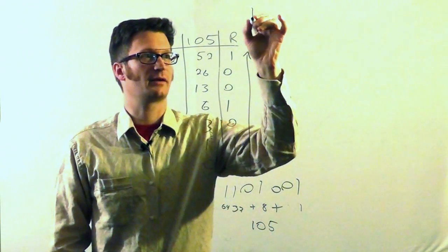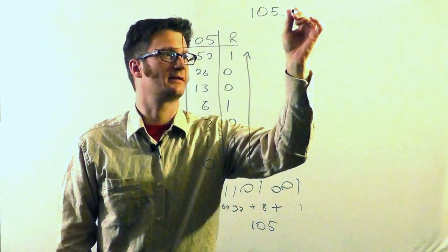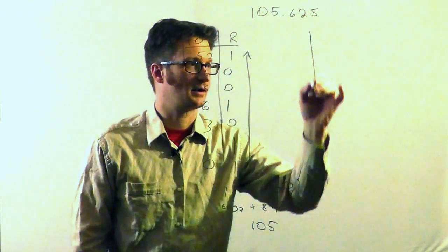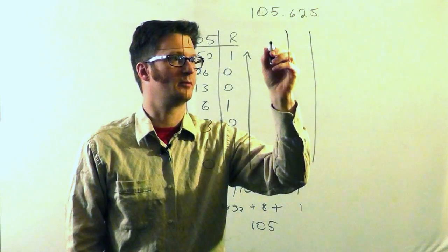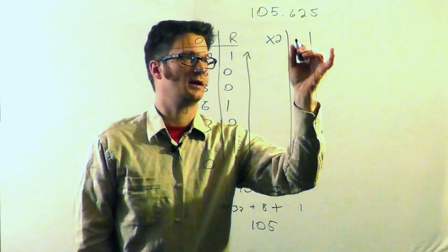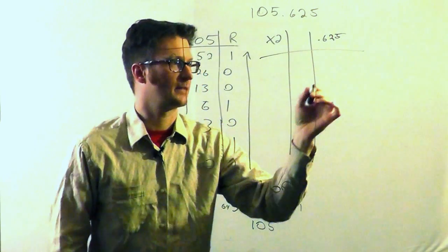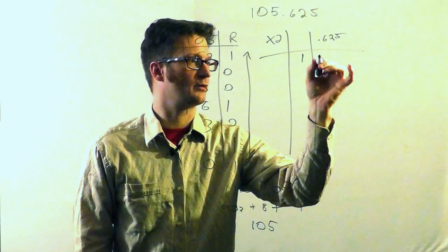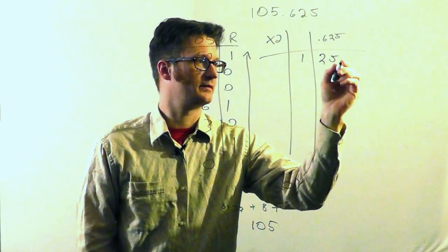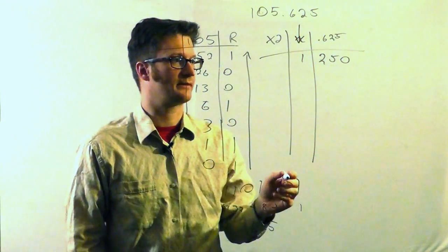Now let's look at the fractional part. Let's say I want to work with 105.625. I'm going to make some more columns now. We're going to multiply by 2 instead of divide by 2. And 0.625 is what I'm starting out with. Times 2, it's 0.125. This column right here is going to be our answer.